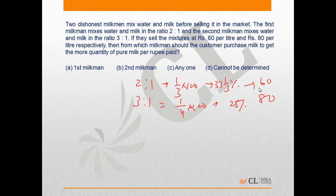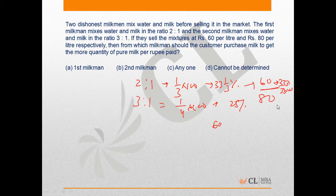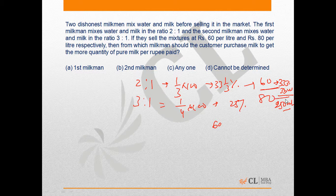When a customer pays Rs 60 to first milkman, he gets 33.33 ml milk. And when he pays Rs 60 to second milkman, he gets just 250 ml milk. So from here it is obvious that he gets more milk from the first milkman.